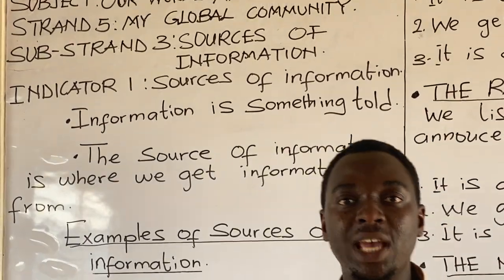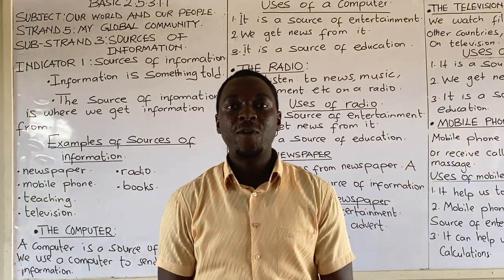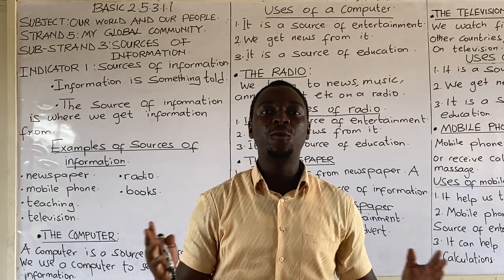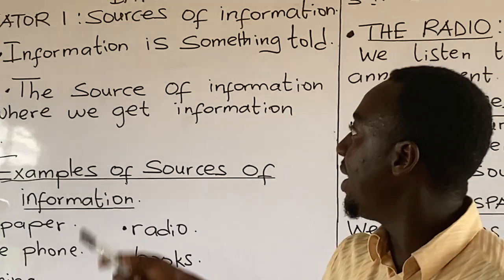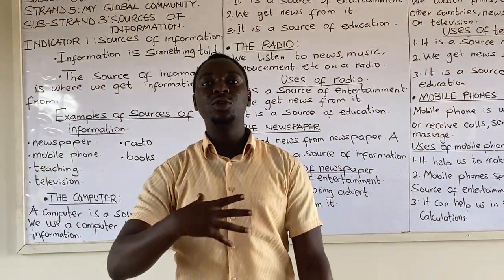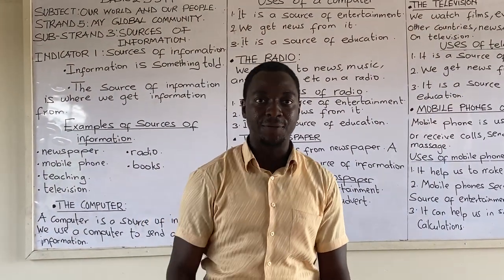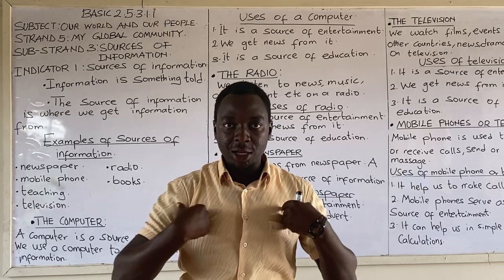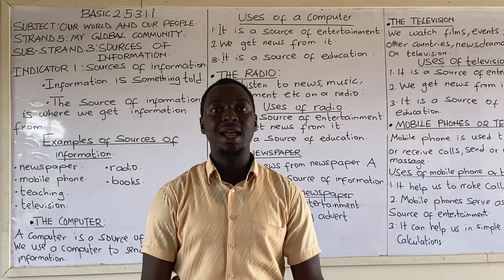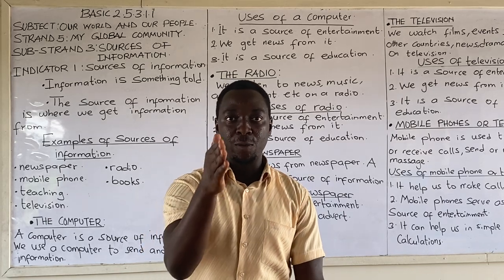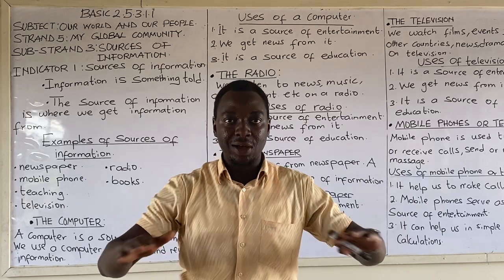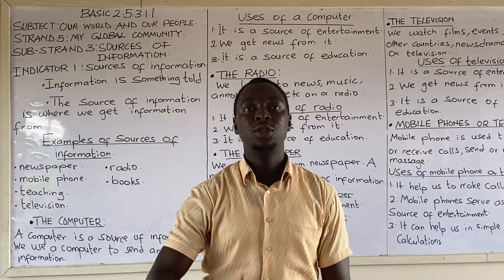Let's look at the keywords in the indicator. The first keyword we have to look at is Information. What is Information? Information is something told. When I begin to tell you about myself, I'm giving you information about myself. When I tell you about a scene I saw at the market, I'm giving you information of what I saw. So in short, at our level, information is something told.